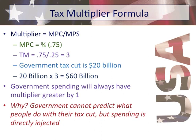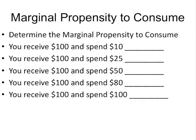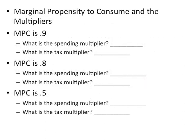Let's look at some examples of MPC. If you receive $100 and spend $10, MPC is 0.1. Spend $25, MPC is 0.25. Spend $50, MPC is 0.5. Spend $80, MPC is 0.8. Spend $100, MPC is 1.0. On this next slide, given an MPC of 0.9, the spending multiplier is 1 over MPS (1 over 0.1) = 10. The tax multiplier is MPC over MPS (0.9 over 0.1) = 9 — which is 1 less than the spending multiplier.